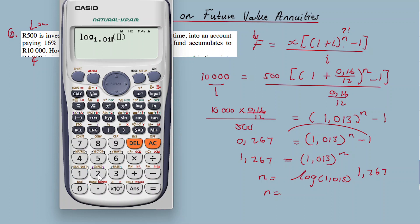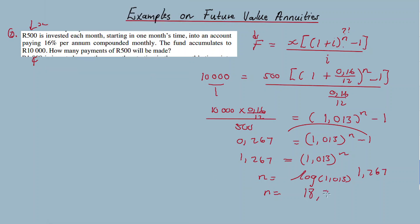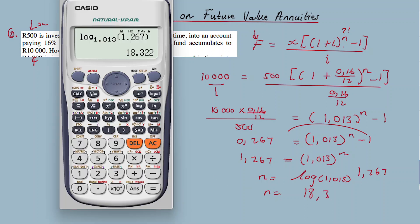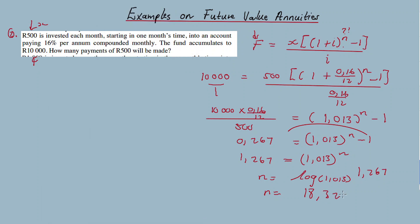To calculate n, I apply the log definition. In this example, I'm assuming you know a little bit about logs and how to use the log definition to make n the subject of the formula. So our answer is 18.322. But wait, n equals 18. The number of payments must be a whole number, so you round off. In total, the answer is 18. This is how you calculate n.